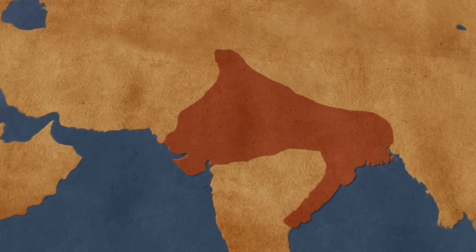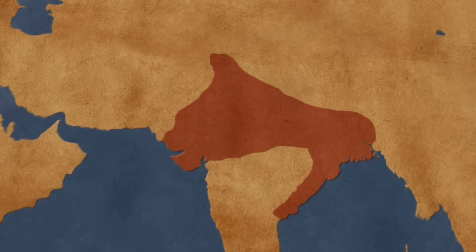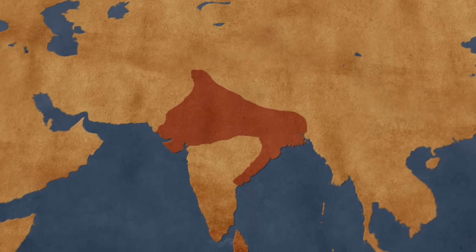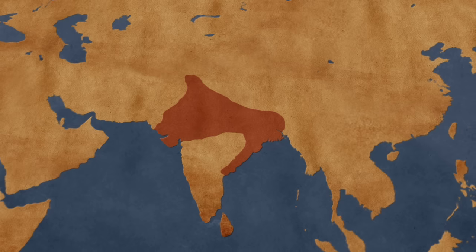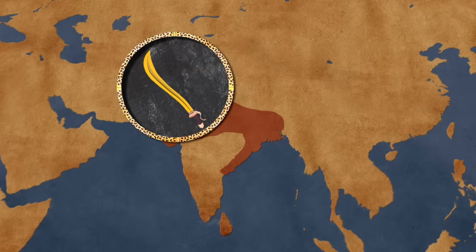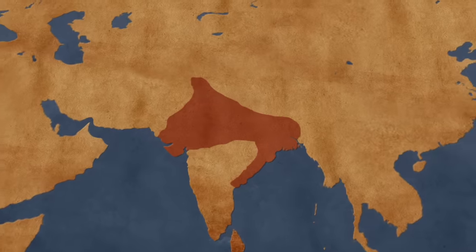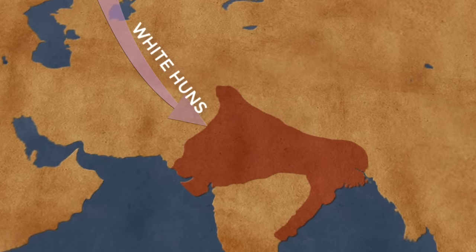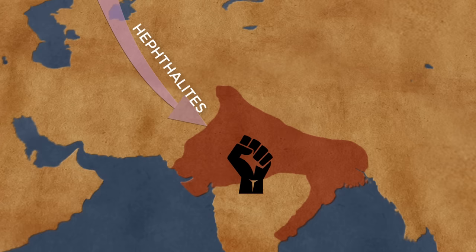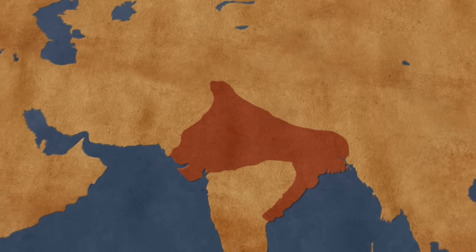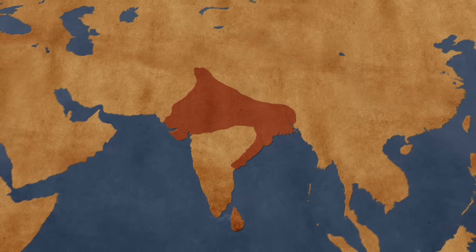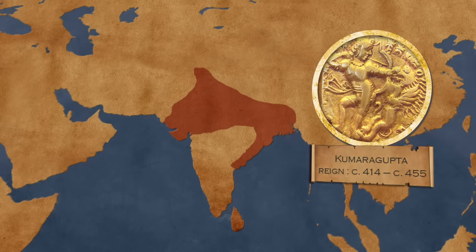In the first half of the 5th century, Kumaragupta, the son of Chandragupta II, ruled the empire from Bengal to Kathiawar and from the Himalaya to the Narmada. Military and financial resources were mobilized to defend the empire against the White Huns, called Hephthalites. The empire was threatened by the rebellion of the Pushyamitras and by the danger of the White Huns. From this time on, a slow decline started. Kumaragupta didn't have as many conquests or campaigns as his predecessors, but he consolidated the power and structure of the empire and is considered a capable ruler.